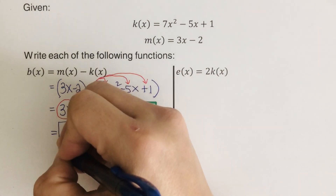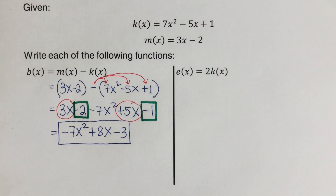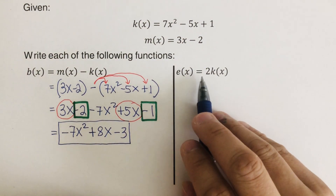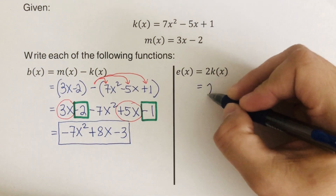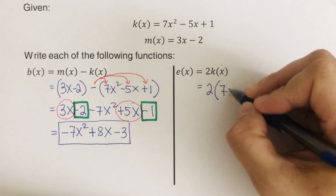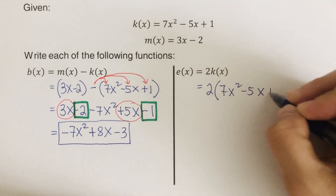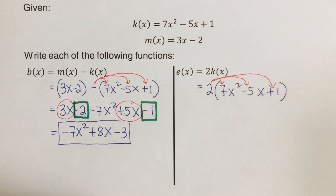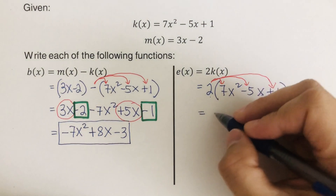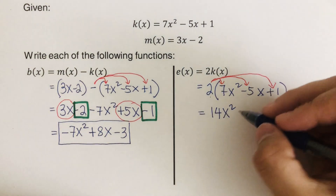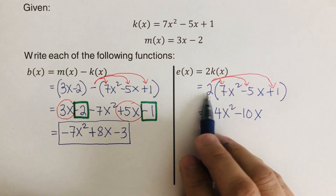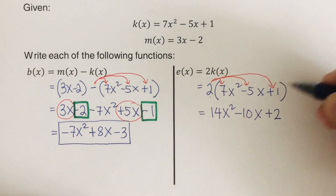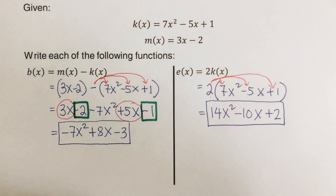So b of x equals negative 7x squared plus 8x minus 3. Did you get the same answer? Good. Now, e of x is equal to 2 times k of x. k of x is 7x squared minus 5x plus 1. We use the distributive property: 2 times 7x squared is 14x squared, 2 times negative 5x is negative 10x, and 2 times 1 is positive 2. So e of x equals 14x squared minus 10x plus 2.